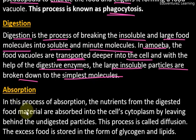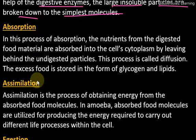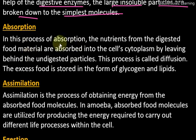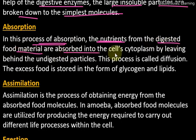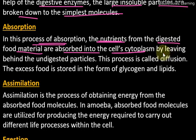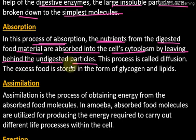The next process is absorption. In absorption, the nutrients from the digested food material are absorbed into the cell's cytoplasm, leaving behind the undigested particles. All the food that is digested is absorbed by the cytoplasm.